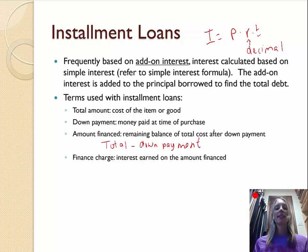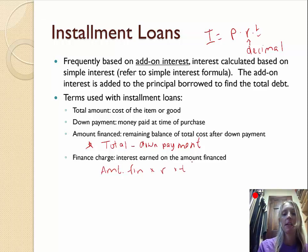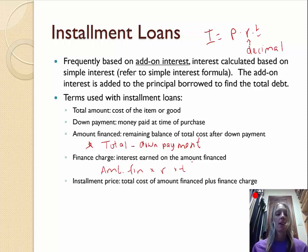Then we have the finance charge. That's the interest earned on the amount that's financed. The finance charge is going to be the amount financed times the interest rate times time given in years. And that would tell you the finance charge, which is the interest you're paying on top of the amount you're financing. The installment price is the cost of the amount financed plus the finance charge. So it's taking this and this and adding those two values together. That's going to tell you the total price.